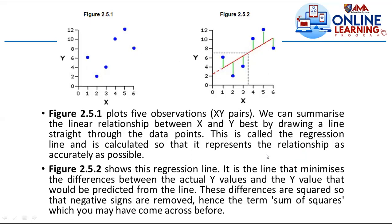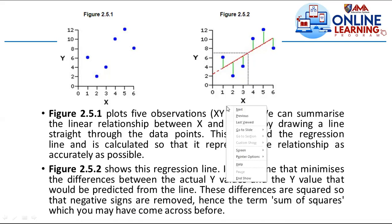Figure 2.5.2 shows the regression line. It is the line that minimizes the differences between the actual y values and the y values that would be predicted from the line. These differences are squared so the negative signs are removed. Hence the term 'sum of squares,' which you may have come across before.